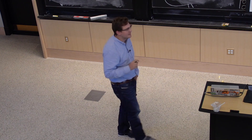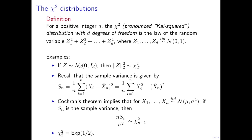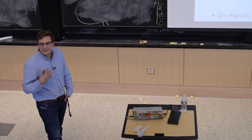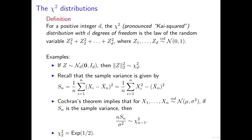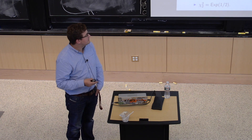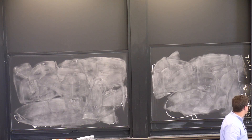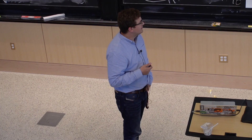Last time, we talked about the chi-square distribution, which is just another distribution that's so common that it deserves its own name. This arises when we sum the squares of independent standard Gaussian random variables. In particular, the sample variance follows a chi-square distribution, and the parameter — also known as degrees of freedom — is the number of observations minus 1. This chi-square distribution has an explicit probability density function.